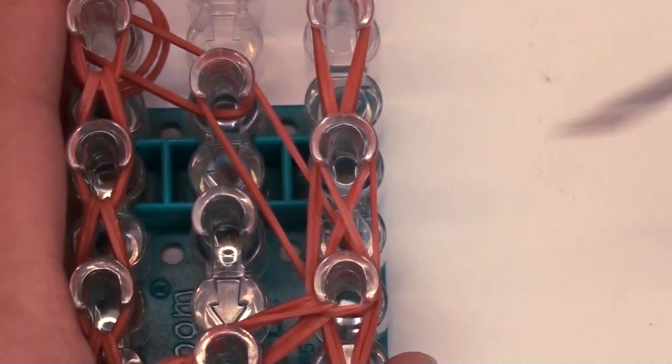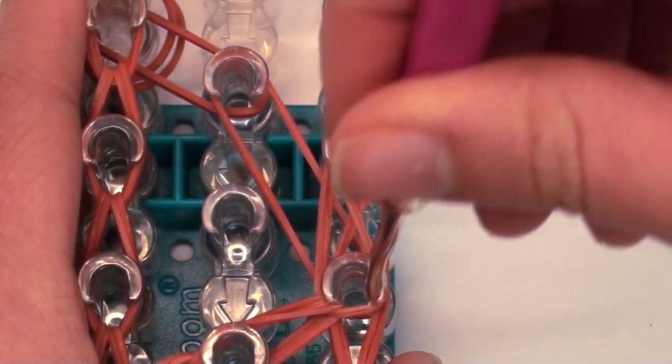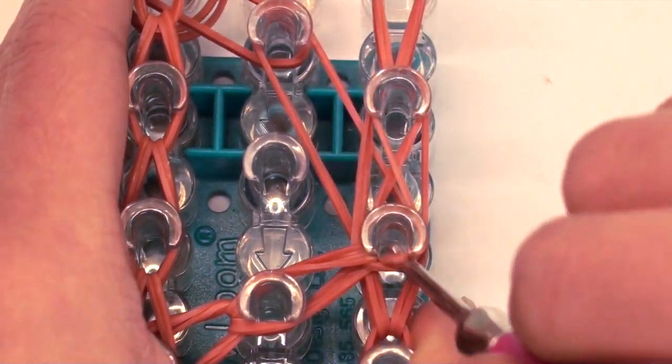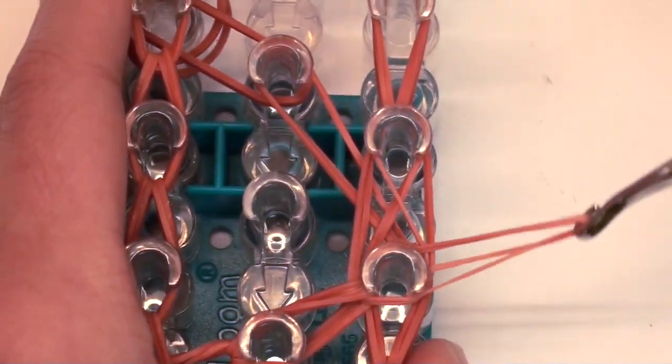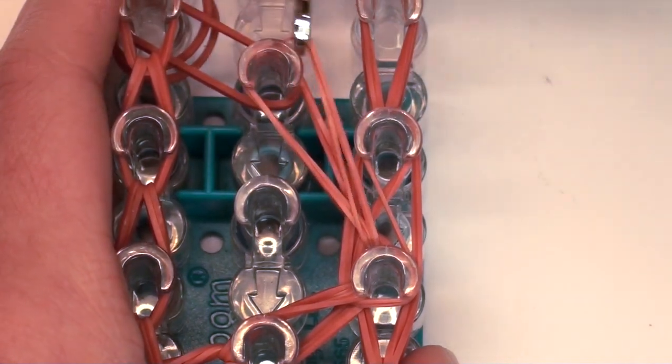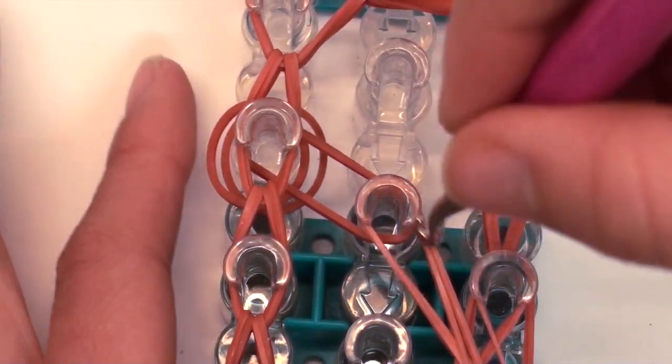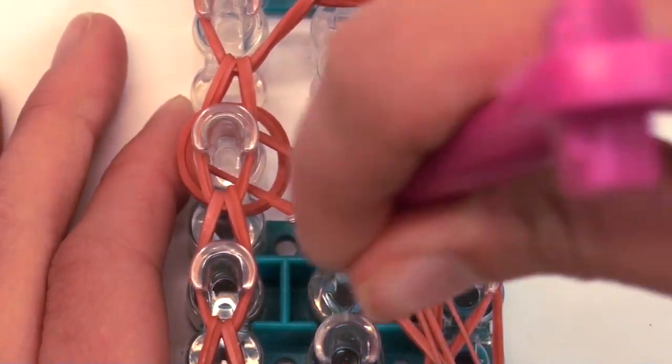So now we're gonna go ahead and hook this long band here. Make sure you go inside the bands at the top here. Go inside of them. Grab the bottom two and hook them over. Back onto the pin where they belong. And now you're going to hook this normal band here. And lastly we're going to finish off this design with these two bands here.